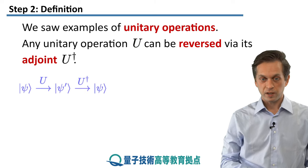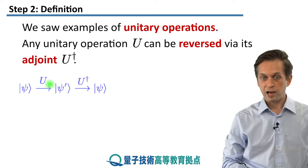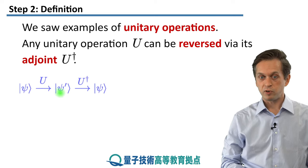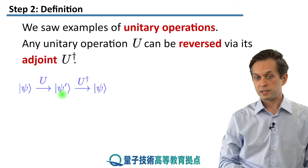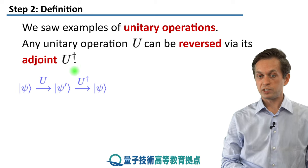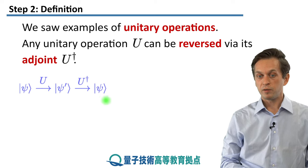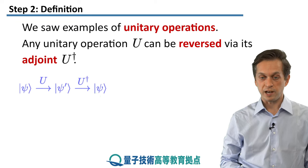So let's see how that works. We start with a ket ψ and we apply a unitary. That transforms it into a completely new ket ψ'. And then if we apply the adjoint, so the operation which undoes the effect of the original unitary, we end up back again at the state ket ψ.